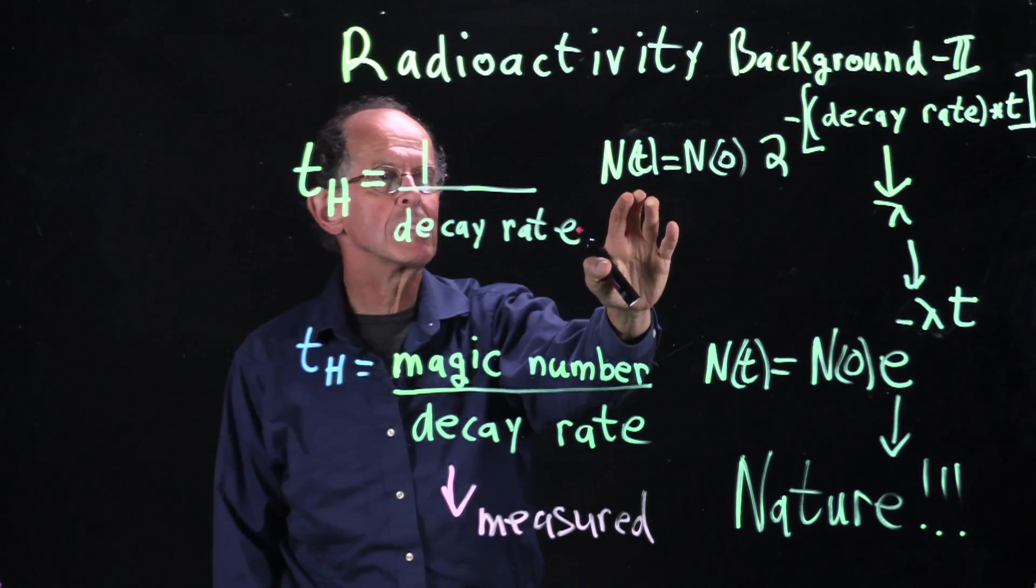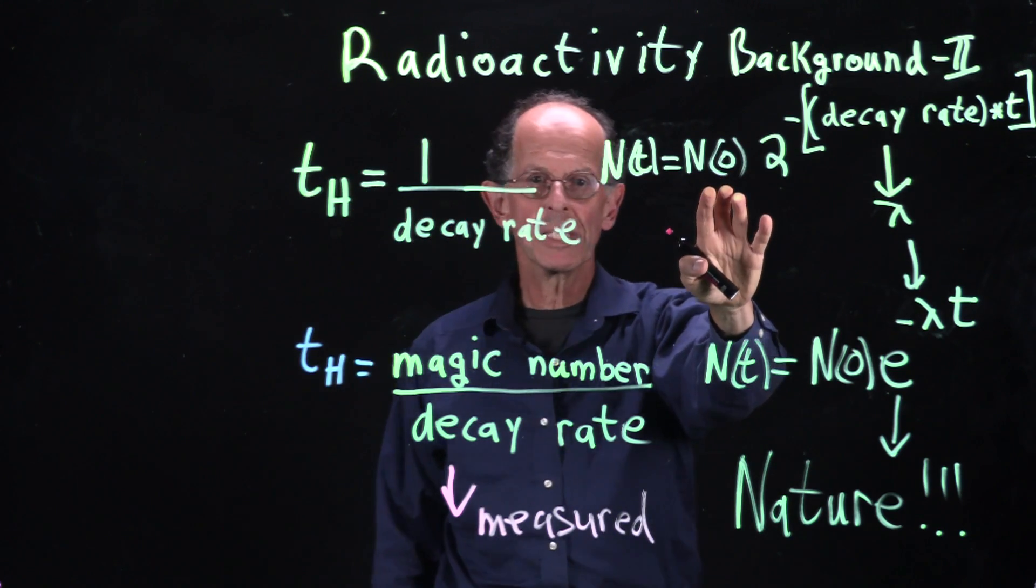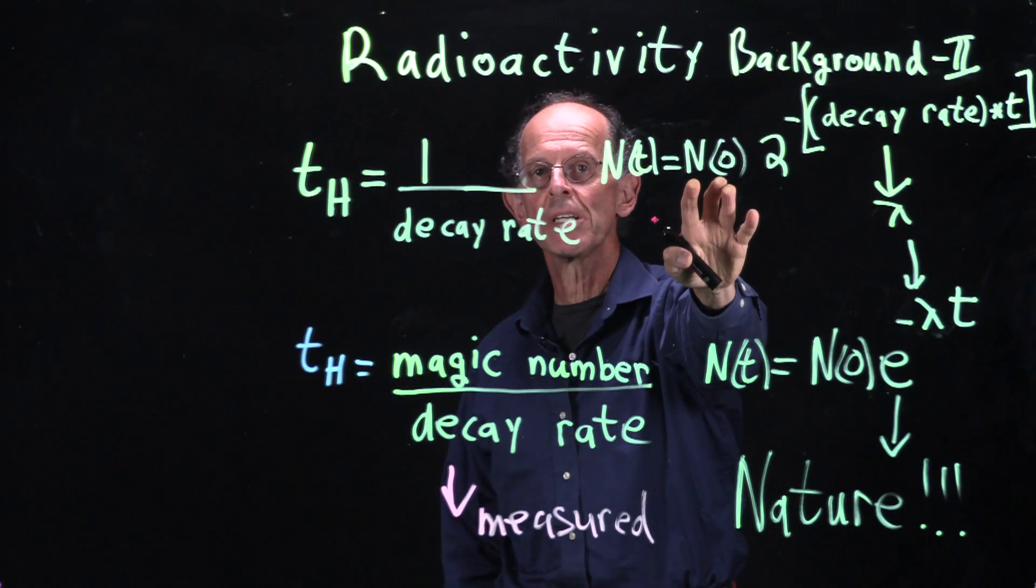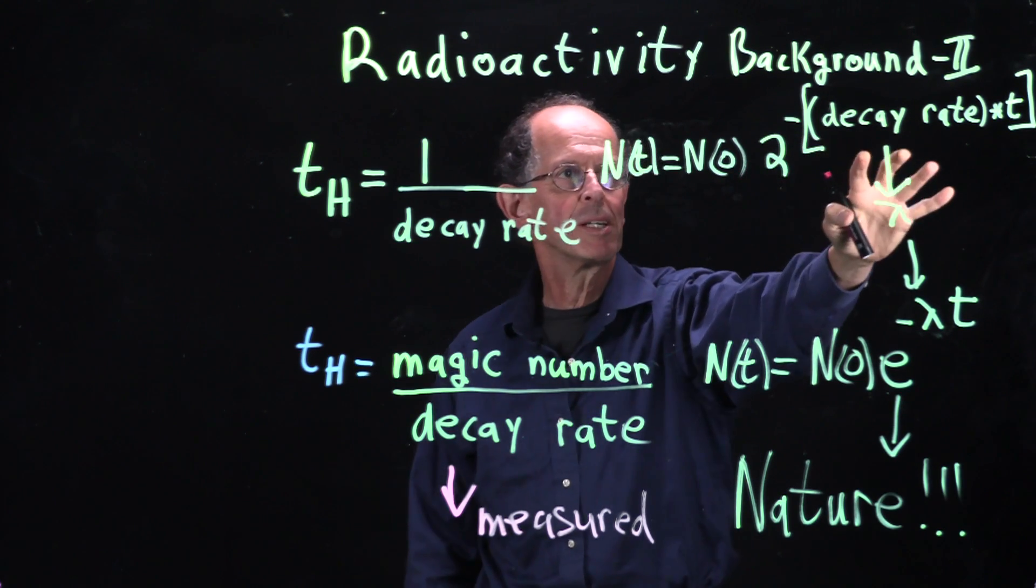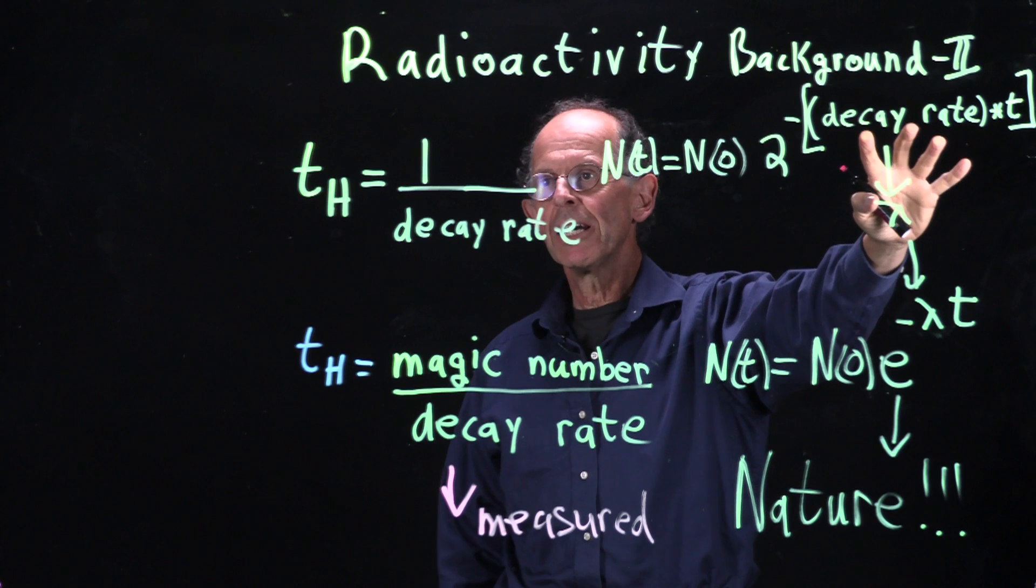And the number of particles left was equal to the number that we started out with, which was n of 0 times 0, which was 8, times 2 to the negative, this decay rate.